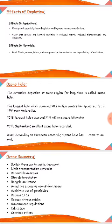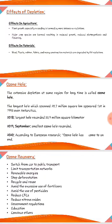The largest ozone hole, spanning 20.7 million square kilometers, was first observed over Antarctica. The biggest ozone hole recorded was in 2018 at 22.9 million square kilometers. In 2019, the smallest ozone hole was observed. According to European research, the ozone hole has come to an end, but the threat could remain until 2050 or 2060.